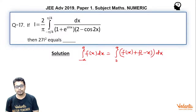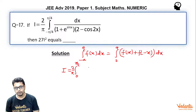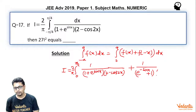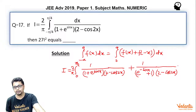Now if we apply this property, i becomes 2 by π times integral from 0 to π/4 of [f(x) + f(−x)] dx. Here f(x) is 1 divided by (1 + e^(sin x))(2 − cos 2x), and f(−x) is 1 divided by (e^(−sin x) + 1)(2 − cos(−2x)), which is (2 − cos 2x) since cos(−θ) = cos θ.